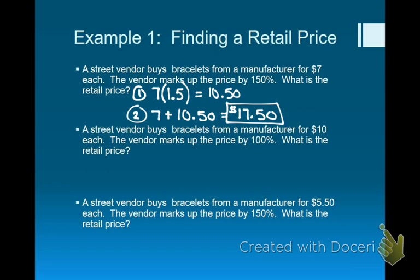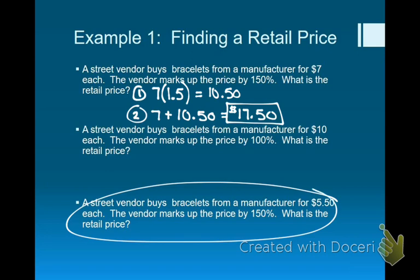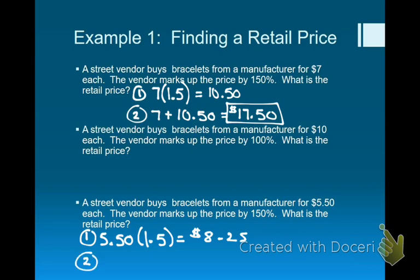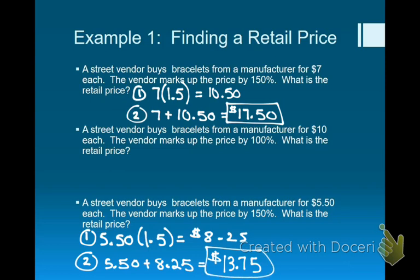Go ahead and do the third one on your own. The bracelets cost a different amount — you still have a markup, so find the retail price. It's the same process except it's $5.50 times 1.5, which gives $8.25. Then in step two, you add $5.50 to get $13.75. You can even do this as mental math: 50 plus 25 cents is 75 cents, and 5 plus 8 is 13, so you put them together: $13.75.